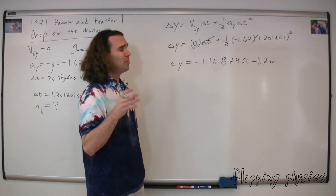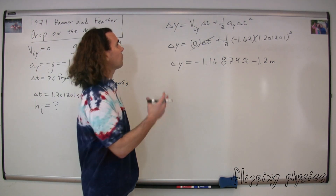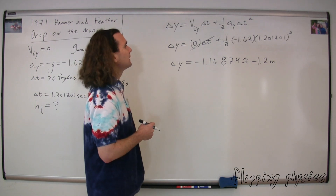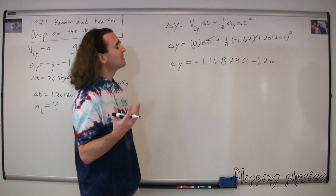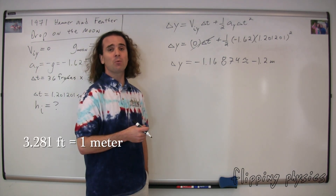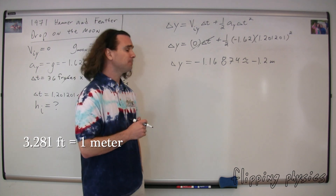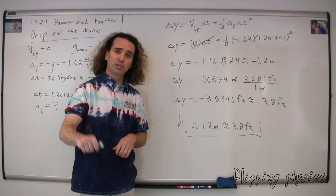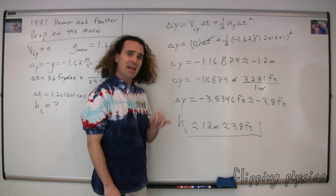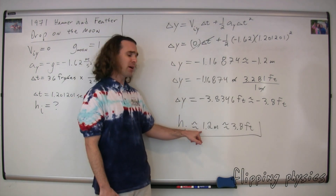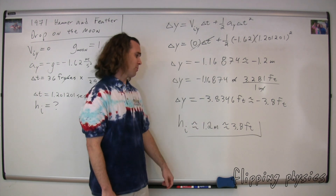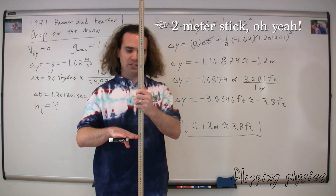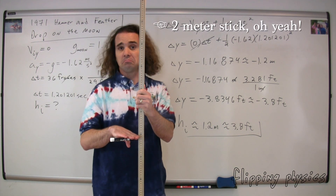Very nice, Bo. One thing to notice is that I added y's to make sure we identify that this is all in the y direction. For those of you still using English units, because there are 3.281 feet per meter, we can convert. Mr. Scott dropped the hammer and the feather from an initial height above the ground of approximately 1.2 meters or 3.8 feet, which is approximately this high — and that looks pretty close.